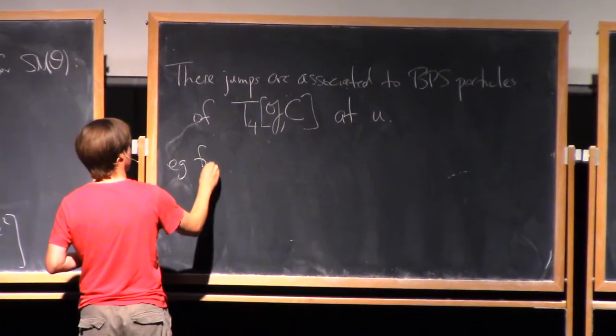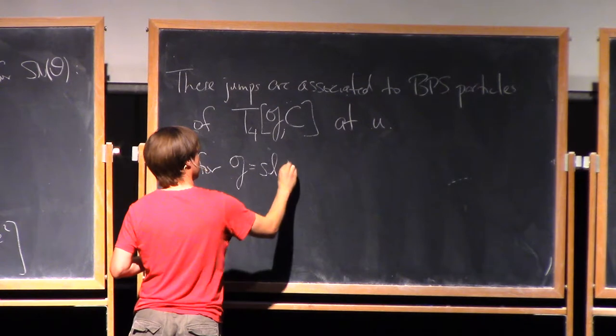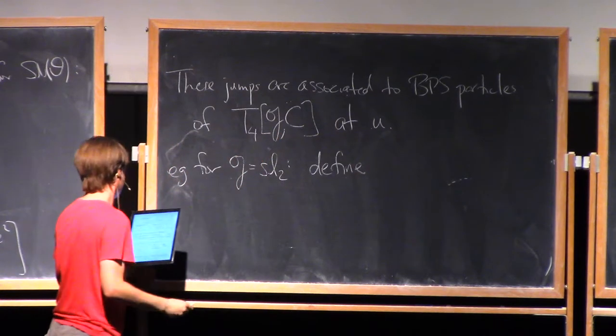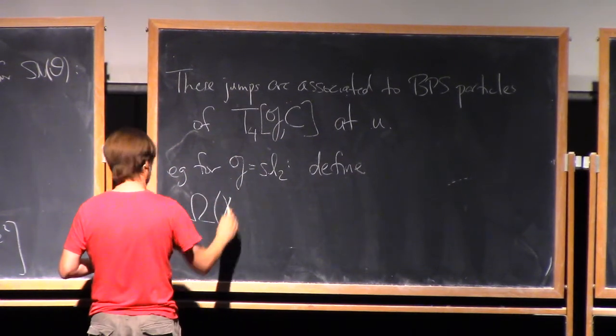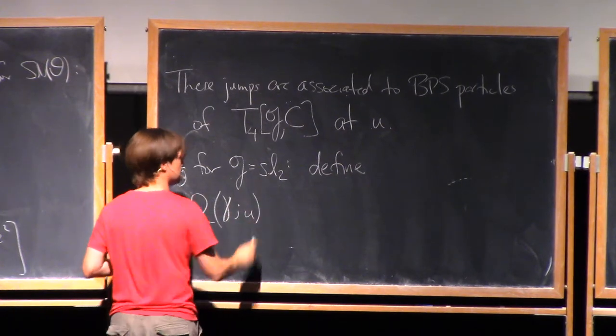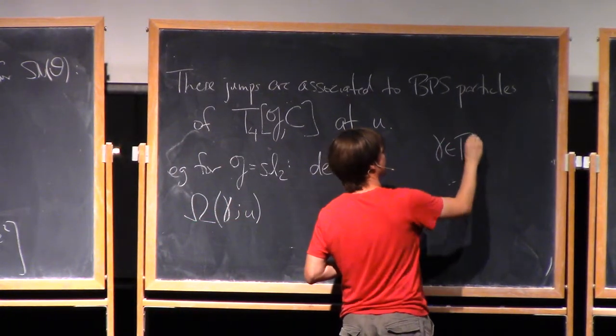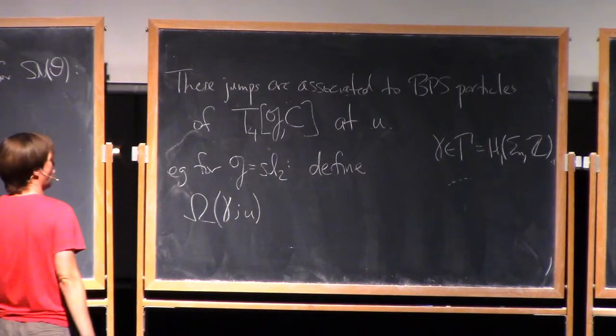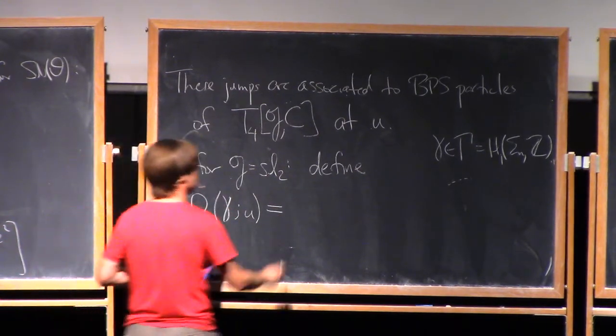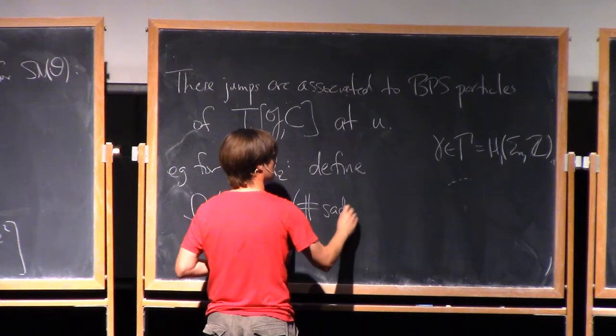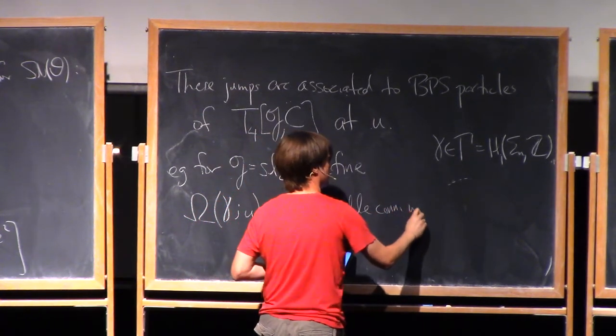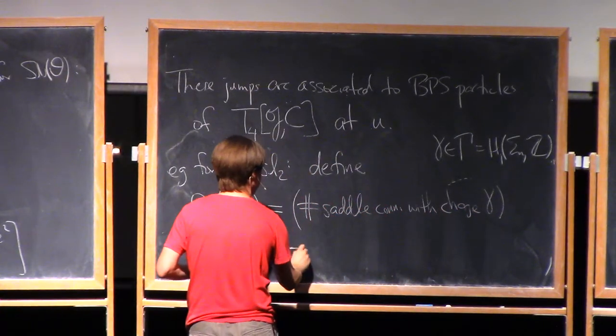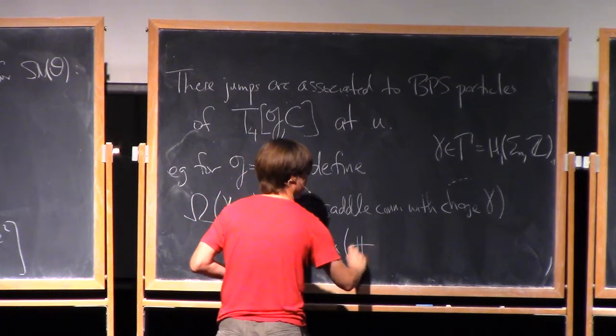So, for example, for G equals SL2, I could define let me define the invariant that counts these BPS particles. Omega of gamma and U. So this is for any gamma in the lattice gamma, which, remember, was the first homology of sigma U. Omega of gamma and U is counting, so it counts the number of saddle connections with charge gamma minus two times the number of ring domains with charge gamma.